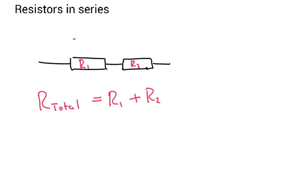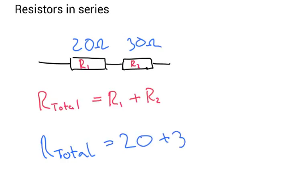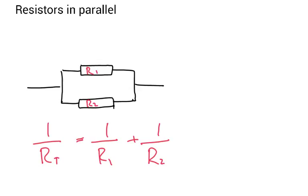Imagine if we had a 20 ohm resistor and a 30 ohm resistor. Well, R total would be equal to 20 plus 30, which is 50 ohms. Nice and simple. Now things get a little bit more complicated when we're talking about resistors in parallel.